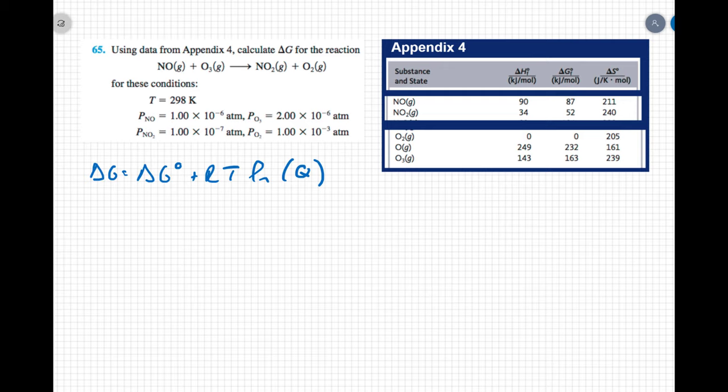Utilize the equation ΔG equals ΔG° plus RT ln(Q). Well, let's find ΔG°. ΔG° is going to be the sum of the standard free energies of formation of the products minus the reactants.